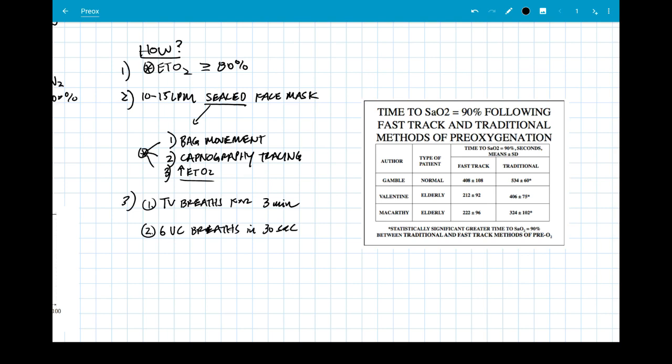But which is better? Well if we look at the study here on the right you will see the time to desaturation of 90% following fast track versus traditional methods of pre-oxygenation. The fast track desaturated to 90% in about 408 seconds compared to the traditional method of 534 in the Gamble paper. In the Valentine paper the fast track patients desaturated in about 212 seconds versus 406 in the traditional, and in the McCarthy paper they desaturated with the fast track method in about 222 seconds versus 324 in the traditional method.